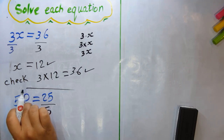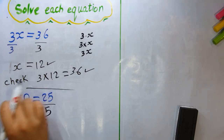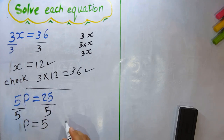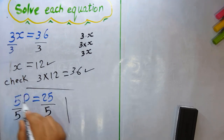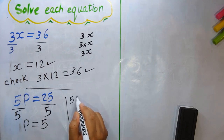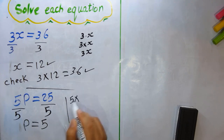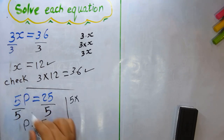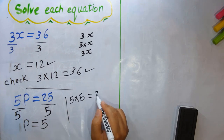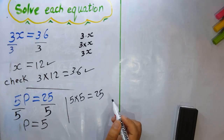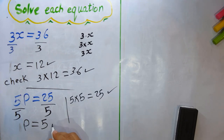To check your answer, substitute b = 5 into the equation: 5 multiplied by 5 equals 25. That is correct, so your answer is correct.